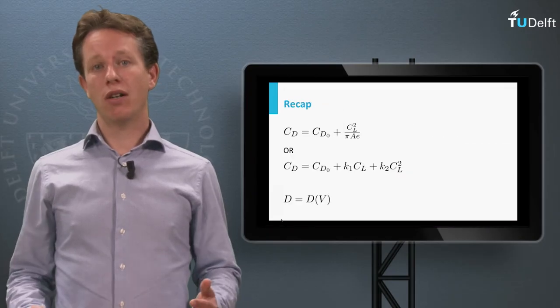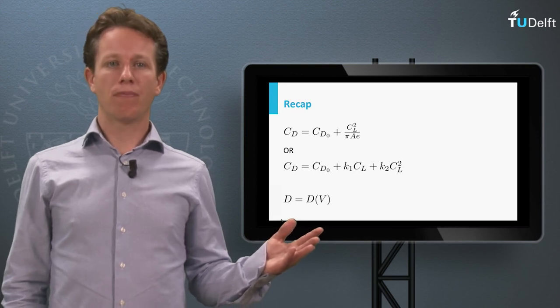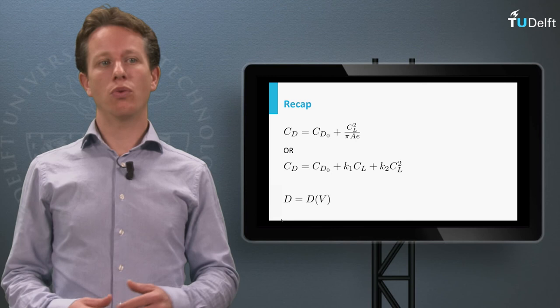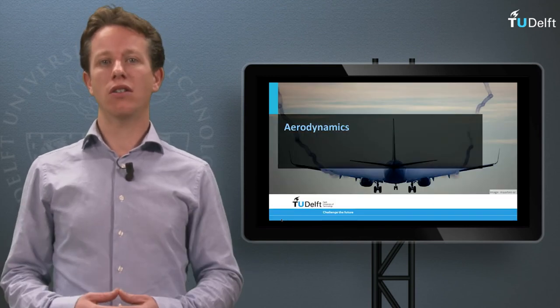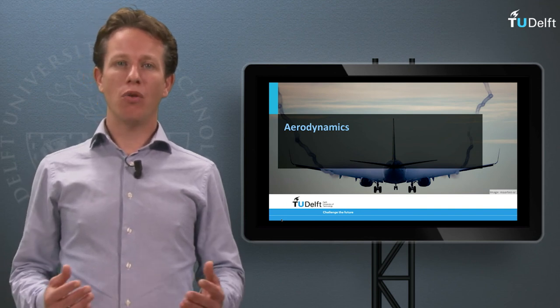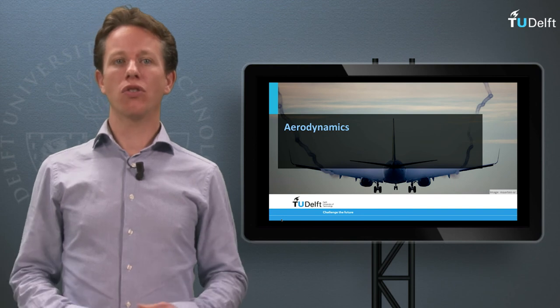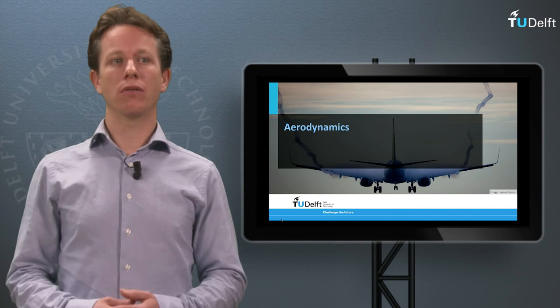Concluding, we have described the aerodynamic drag as a function of airspeed under the assumption that lift equals weight. This simplifies our equations of motion which we started with in this lecture. In the next lecture I will show you how propulsion and thrust can also be expressed in terms of airspeed, making the equations of motion much simpler.